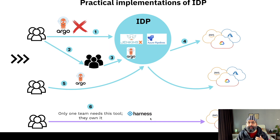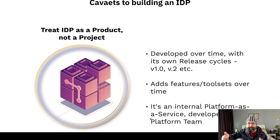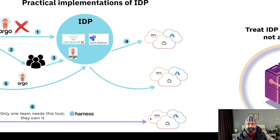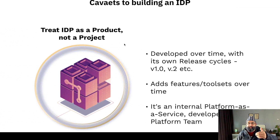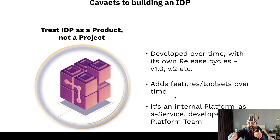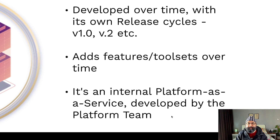A key caveat to building an IDP: treat it like a product, not a project. An IDP is developed over time in its own release cycles — version one might be just Jenkins, version two adds Azure Pipelines, version three adds Argo CD when a team requires it. Tool sets and features are added over time, which means you also need a product manager to lay out the vision of the IDP and iteratively build on it. Think of it as an internal platform-as-a-service developed by the platform team.